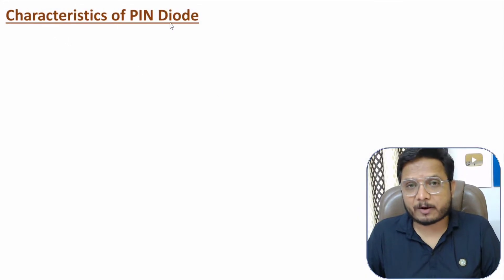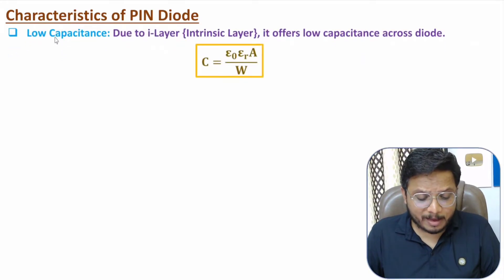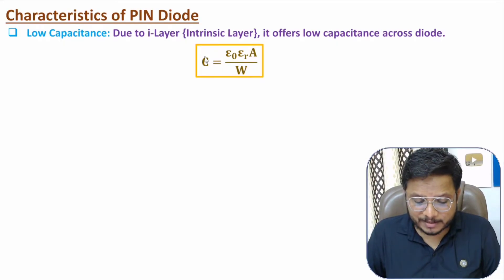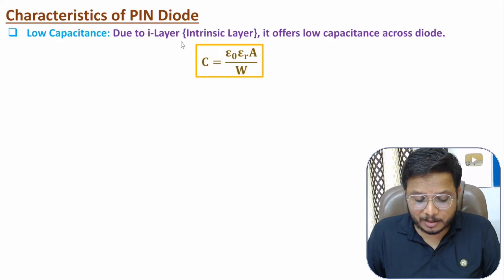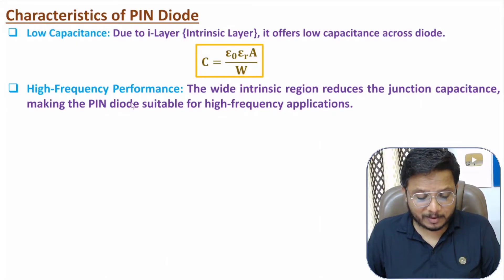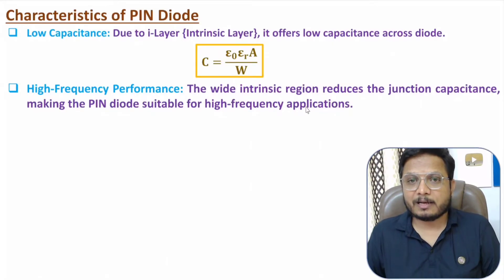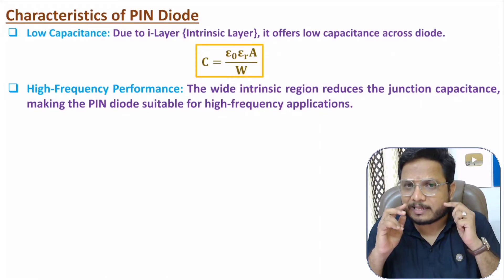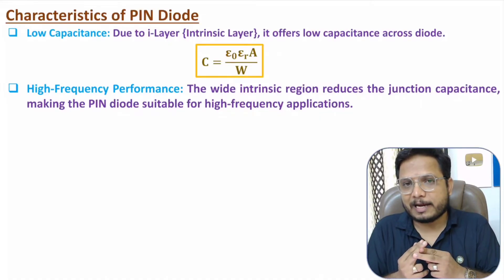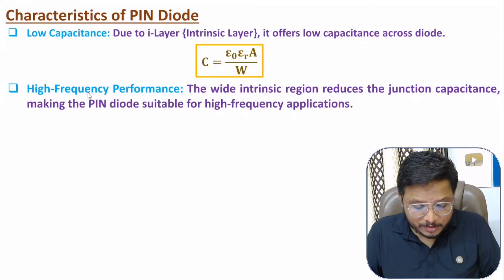PIN diode has a lower value of capacitance due to the intrinsic layer, which provides a wider depletion width W. Since C = ε₀εᵣA/W, capacitance is inversely proportional to the width of the depletion region — because W is high, capacitance is low. PIN diode therefore has high frequency performance: lower junction capacitance allows the device to be used in high-frequency applications. This is an essential fundamental that every electronics engineer must know.